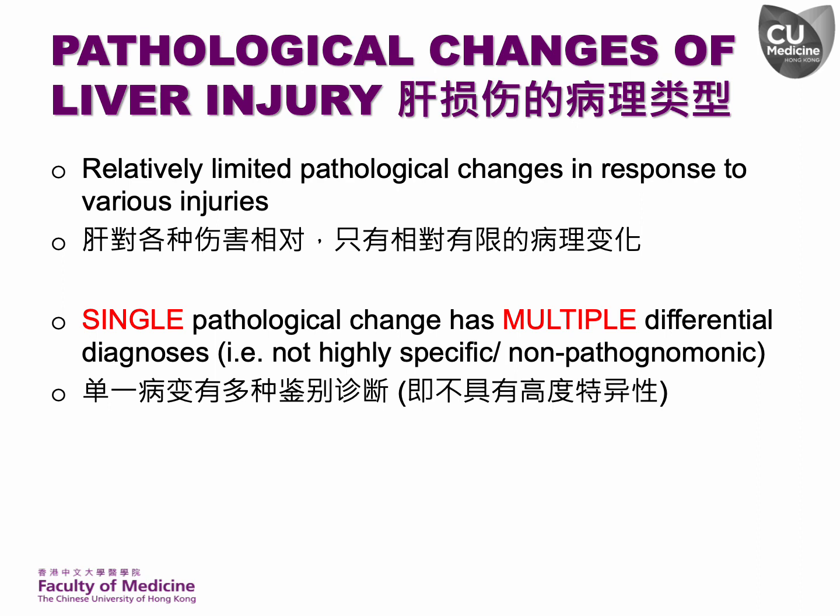The liver displays a limited range of morphological changes in response to a diverse array of infectious, metabolic, immune-mediated or vascular injuries. Many of these changes are neither pathognomonic nor specific, meaning they can be associated with a variety of different disorders. This non-specificity can make it challenging to diagnose the underlying cause of liver damage based solely on individual pathological changes.